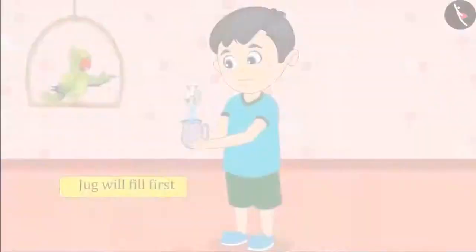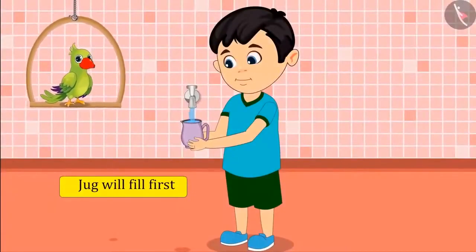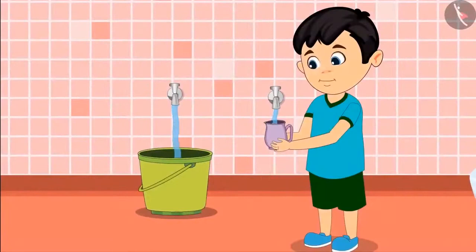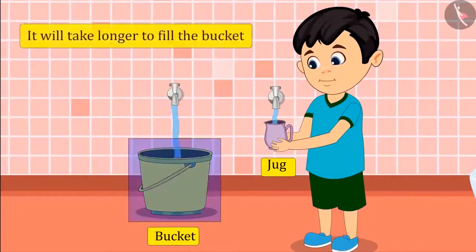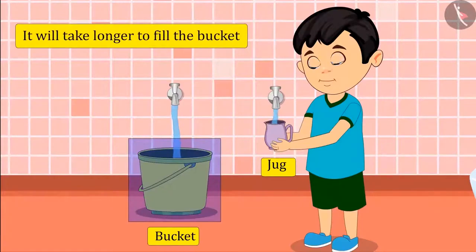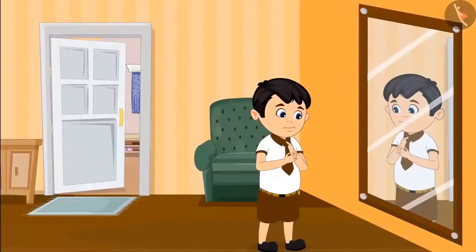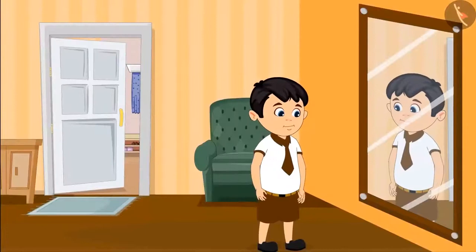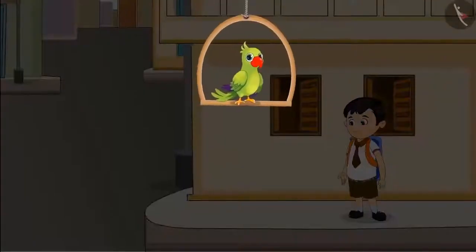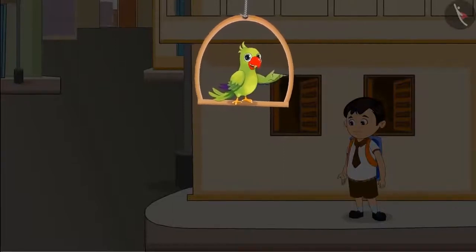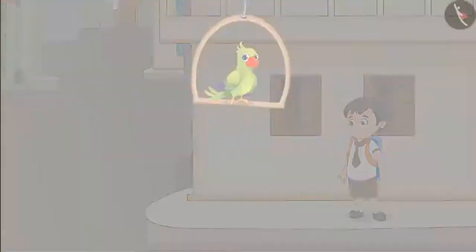The first thing to get filled is the jug and later the bucket. Because Chotu's jug is smaller than the bucket, it will carry less water. This means it will take more time to fill the bucket. After filling water, Chotu watered the plants and then took a quick shower and got ready to go to school. In the morning, it took much time for Chotu to water the plants and he got delayed in getting ready for school.